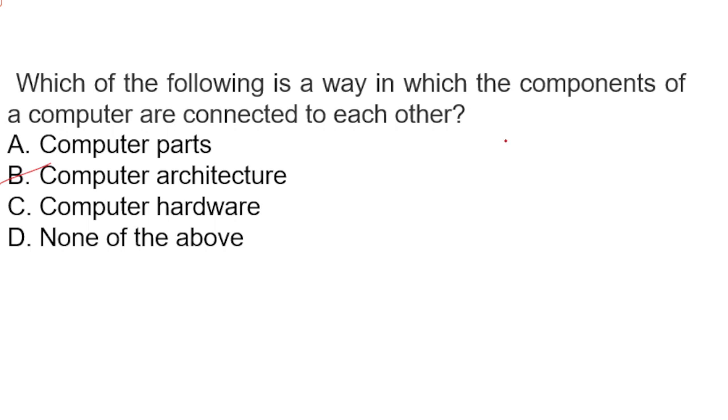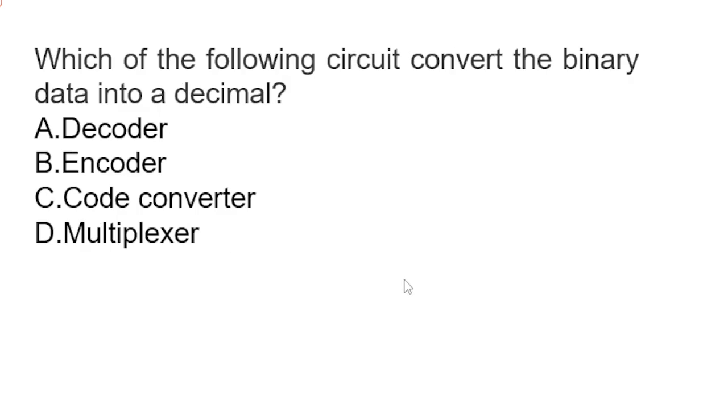Which of the following circuit converts the binary data into decimals? Options are decoder, encoder, code converter, multiplexer. So guys, what is the correct answer? The answer is C, code converter that converts binary data into decimal.